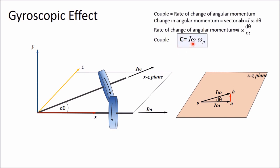This gives the relation for the gyroscopic couple: C = Iωωp, where I is the moment of inertia of the disc about its axis, ω is the angular velocity of spin, and ωp is the angular velocity of precession — the angular velocity of the axis of spin.